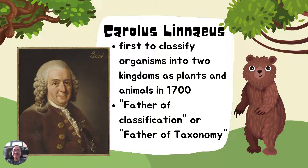Carolus Linnaeus was the first to classify organisms into two kingdoms — plants and animals — in 1700. When Linnaeus developed his classification, there were only two kingdoms. He is known as the father of classification, or the father of taxonomy.